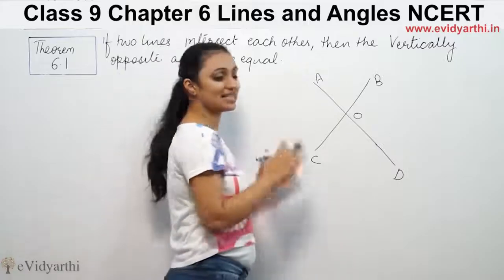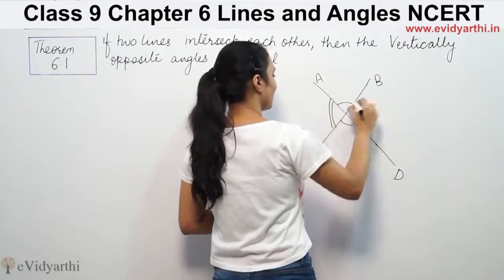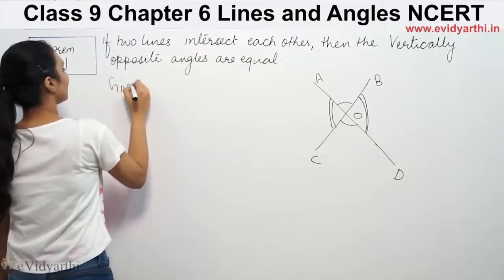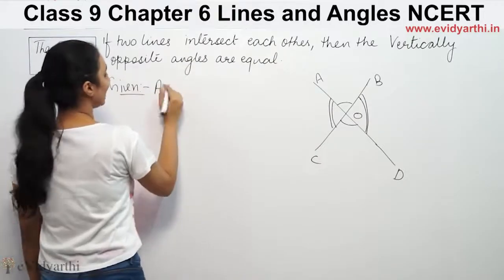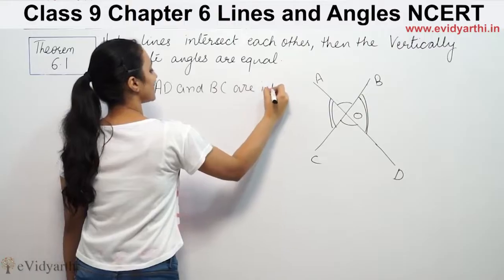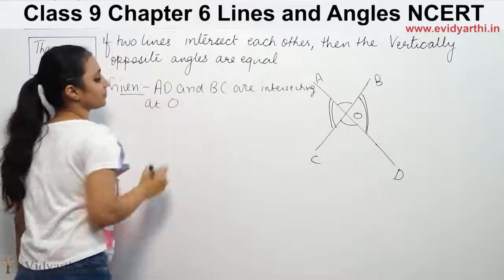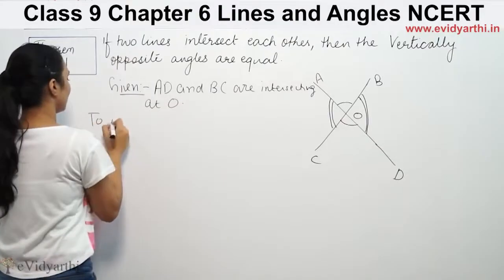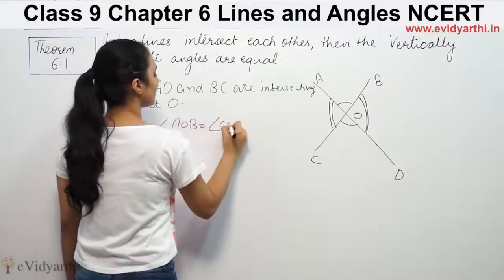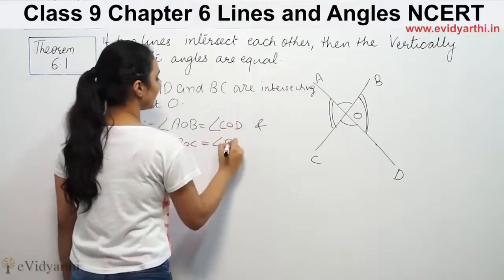To prove that if lines intersect, then vertically opposite angles are equal. Given: AB and CD are intersecting at O. To prove: angle AOB is equal to angle COD, and angle AOC is equal to angle BOD.